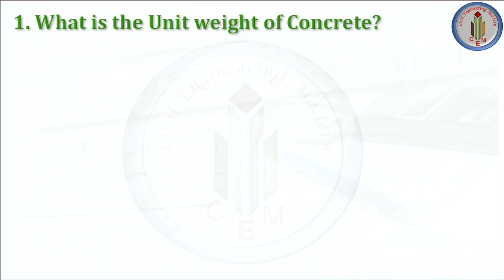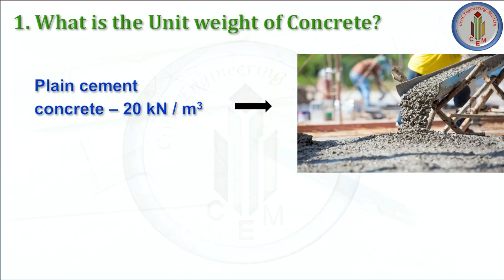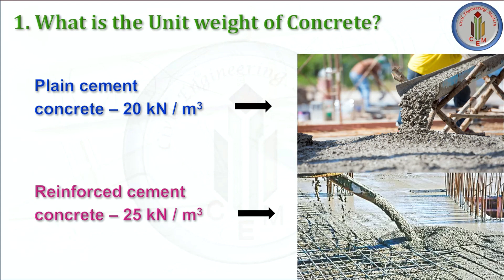First question: what is the unit weight of concrete? We have plain cement concrete and reinforced cement concrete. For plain cement concrete (PCC), it is 20 kilonewton per meter cube. For reinforced cement concrete (RCC), it is 25 kilonewton per meter cube. This unit weight of RCC is used whenever we calculate the self-weight of the structural members.